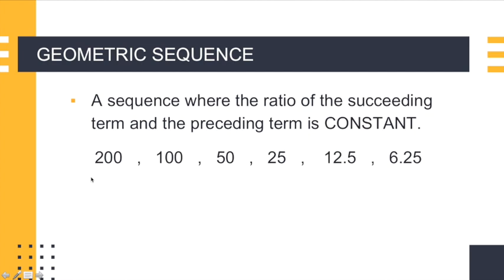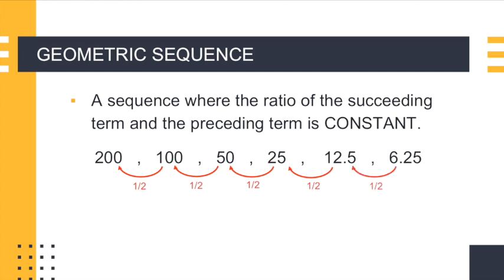What do I mean by the ratio of the succeeding term and the preceding term? So this is our succeeding term. Divided by 200, we get 1 half. The ratio of 50, the succeeding term, and the preceding term 100, which is 50 divided by 100, is also equal to 1 half. In the same manner, 25 over 50 is 1 half, 12.5 divided by 25 is 1 half, and the ratio of 6.25 and 12.5 is 1 half. So the ratio is constant — it doesn't change. It is the same as 1 half in every ratio. So this is what we call the common ratio.